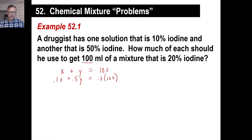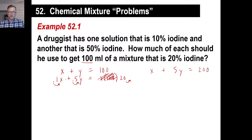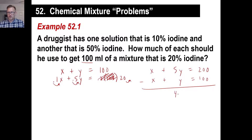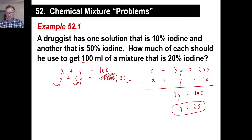What I would do first is compute 0.2 times 100, which is 20. I don't want decimals, so I'll move everything over once: the second equation becomes x plus 5y equals 200. The first equation is x plus y equals 100. Using elimination, 5y minus y is 4y, and 200 minus 100 is 100, so y equals 25. We don't need to do much else — if y is 25 and the total is 100, then x equals 100 minus 25, which is 75.